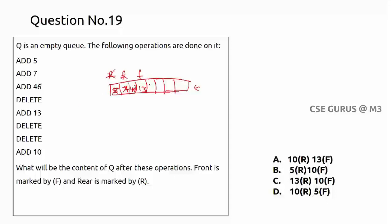Add 10. The queue now contains 13 at the front and 10 at the rear. So the front is 13 and rear is 10. The answer is option A.